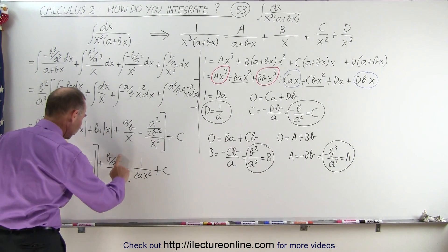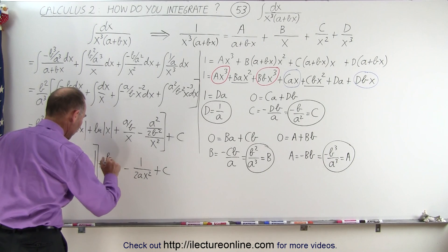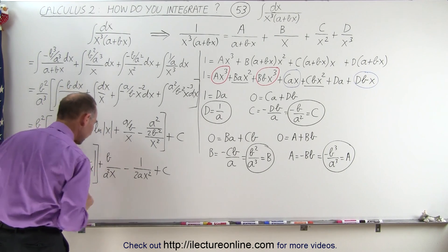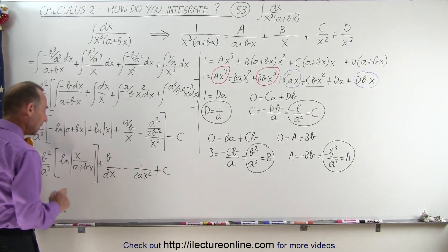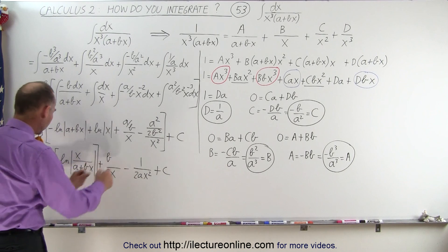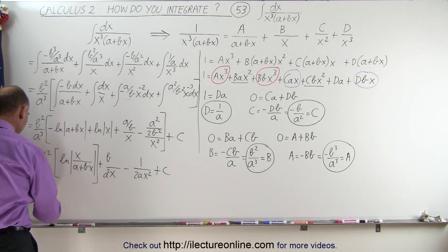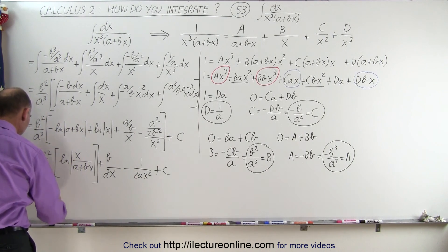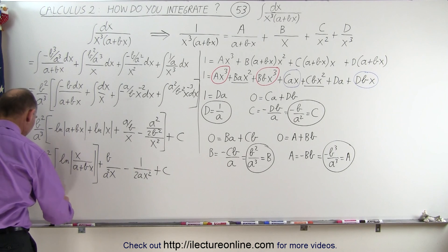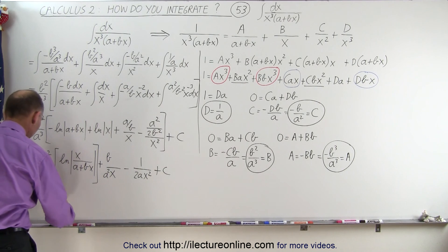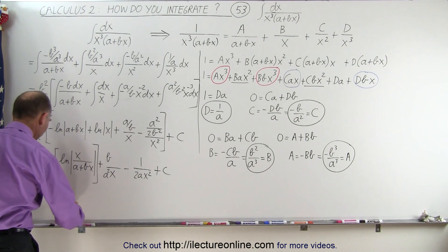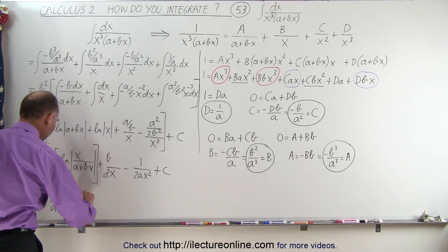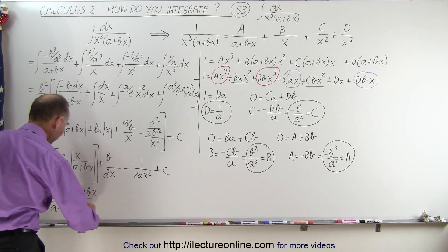The next thing we want to do is simplify further by combining those two fraction terms. Let's write b over a squared in the denominator. Now we can combine those two terms, and we're going to make this a negative. So this becomes equal to negative b squared over a cubed times the natural log of a plus bx over x, because that tends to be the more preferred way of writing that.